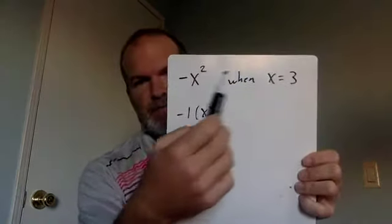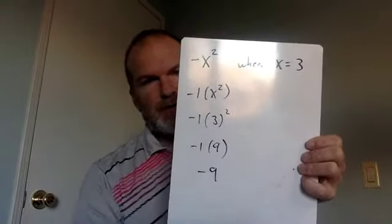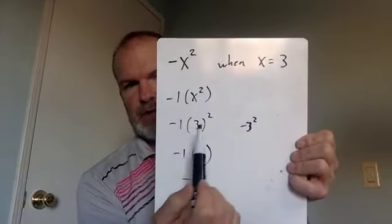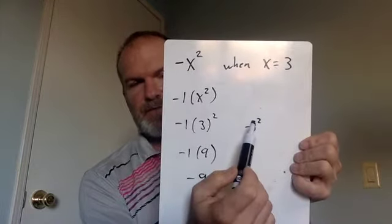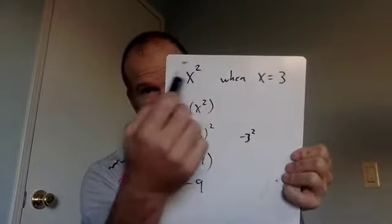So this is negative 1 times 9, which is actually negative 9. So that's how you get from this problem to negative 9, not positive 9. If you multiply these together first, then you have negative 3 squared, and that's what a lot of you want to do. You want to multiply this together first to get negative 3 squared, and then square it and get positive 9. This answer is not positive 9.